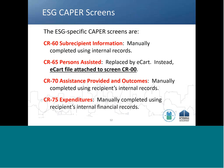The ESG-specific CAPER screens are CR60, CR65, CR70, and CR75. CR65 is now replaced by the ESG CAPER Annual Reporting Tool, or ECART.